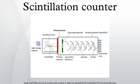Operation: When an ionizing particle passes into the scintillator material, atoms are ionized along a track. For charged particles, the track is the path of the particle itself.